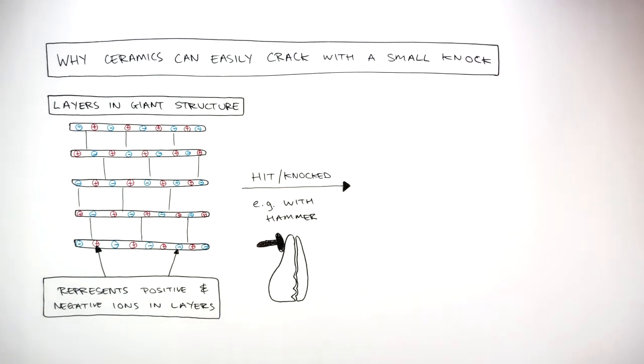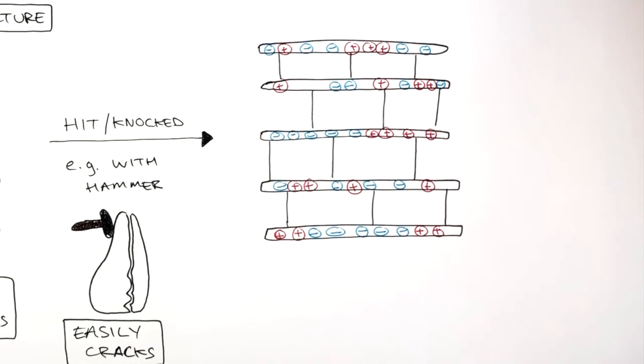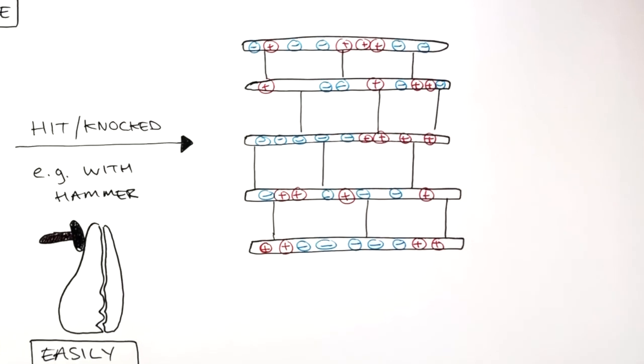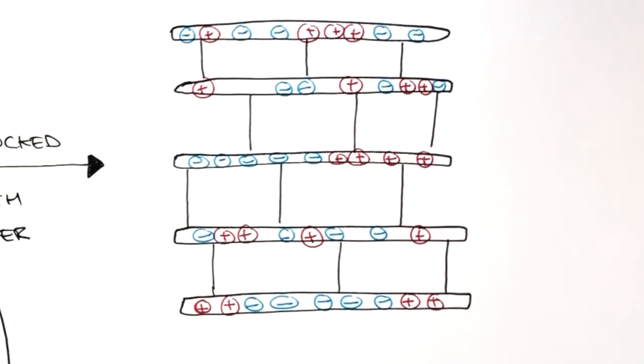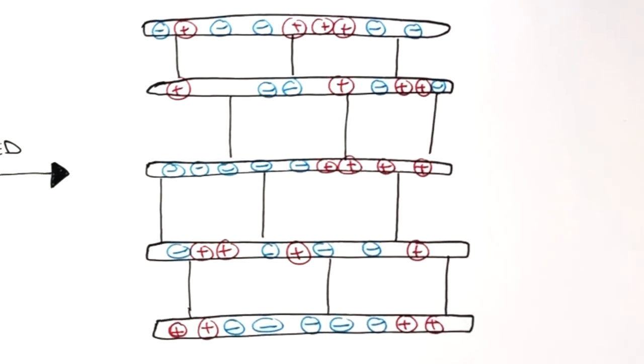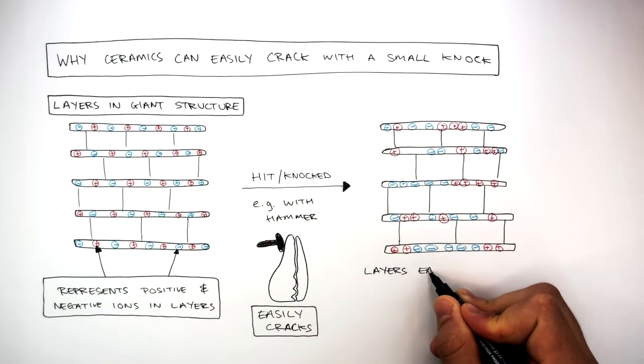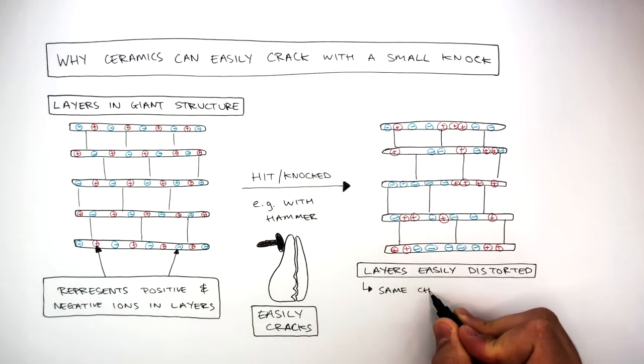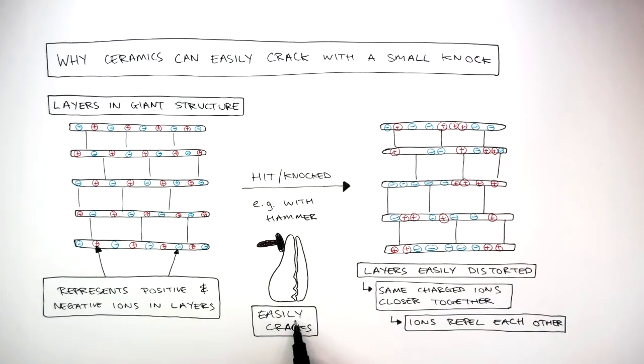Why does the ceramic easily crack with a small knock? If you look closely, the layers are easily distorted with a knock, which causes the same charged ions in the layers to move closer together. They repel each other, causing the ceramic to easily crack. So the layers are easily distorted, the same charged ions move closer together, these ions repel each other, and the ceramic easily cracks.